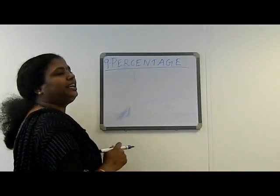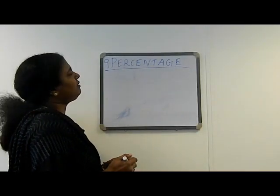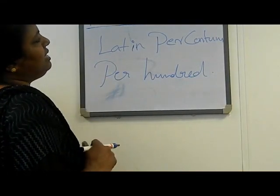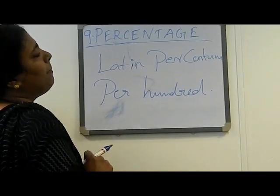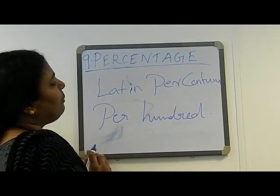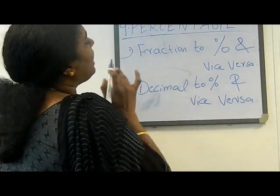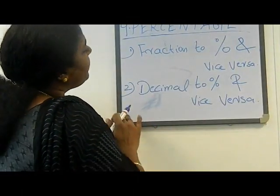Today we are explaining mathematics for CBSE syllabus, Class 7, Chapter 9: Percentage. We will discuss the meaning of percentage. The word percentage is derived from the Latin word 'percentum', meaning per hundred. In this chapter we are explaining examples of converting fraction to percentage and vice versa, and decimal to percentage and vice versa.